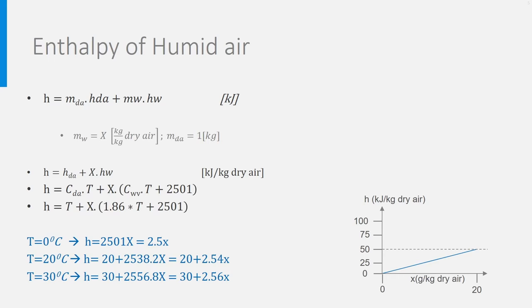If we now take a temperature of 20 degrees Celsius, the equation is transformed to 20 plus 2.54 x, which is this line. And the same happens for 30 degrees.